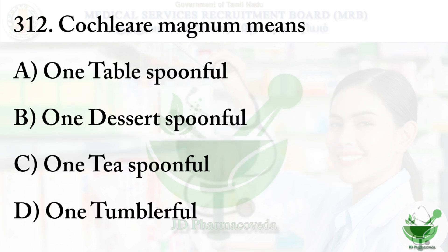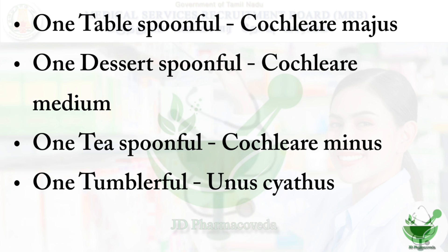Question number 312: Cochlear magnum means? Option A: one tablespoonful, Option B: one dessertspoonful, Option C: one teaspoonful, Option D: one tumbler full. The correct answer is Option A, one tablespoonful. Also known as cochlear magus. One dessertspoonful is cochlear medium, one teaspoonful is cochlear minus, and one tumbler full is unas cyathus.